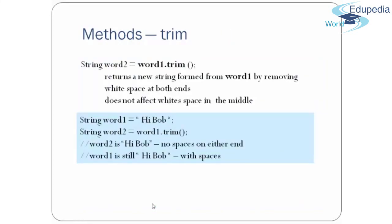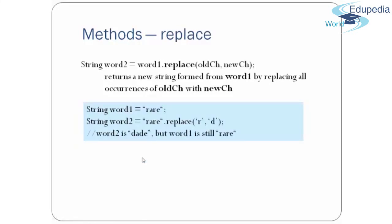Another important method is trim(). Using word2 = word1.trim() returns a new string formed from word1 with white spaces removed from both ends. So " hi bob " becomes "hi bob" with no leading or trailing spaces, while word1 remains unchanged. The replace() method replaces one character with another. For example, replacing 'r' with 'd' in "rare" gives "dade", while word1 still remains "rare".